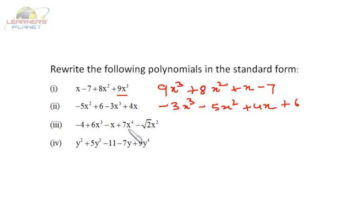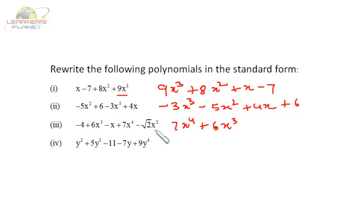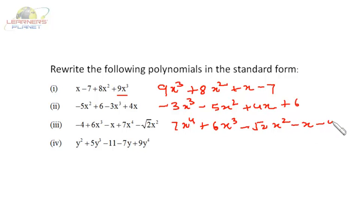Similarly, the highest power of the variable here is 4. So let's begin with 7x⁴, then +6x³, then -√2x², then -x, and then -4. So it's very simple — the highest power here is 4.